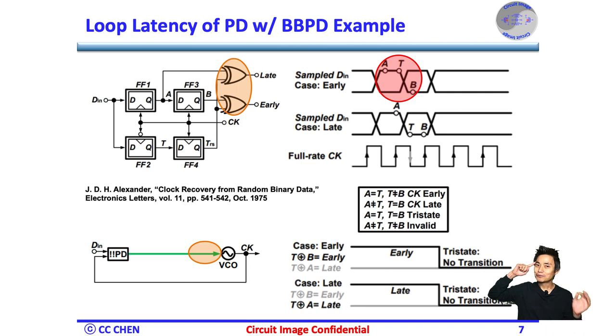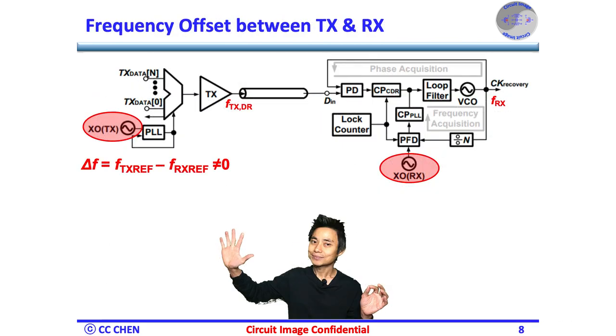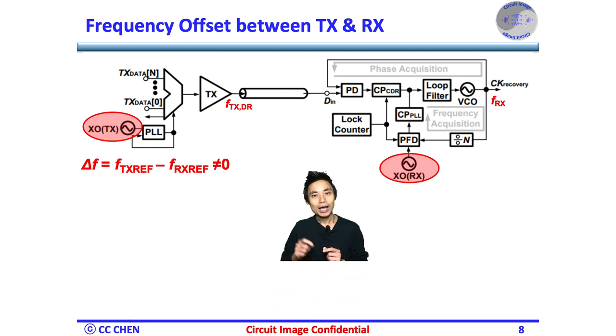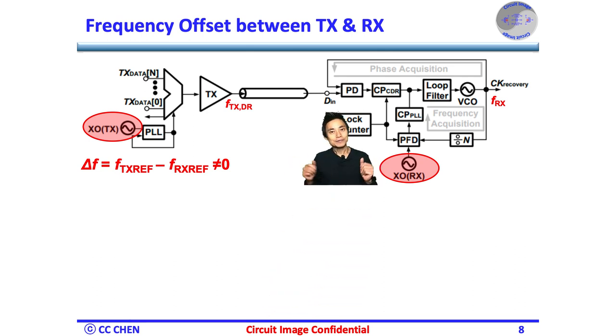Why would the loop latency still be an issue if we pay much attention to the design here? Think about the frequency offset and integral path images for 5 seconds. Right, the data rate of the SerDes link would have a certain frequency offset between the transmitted data rate and the receiver's local clock frequency.